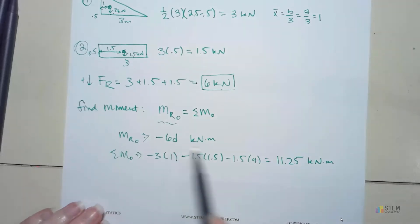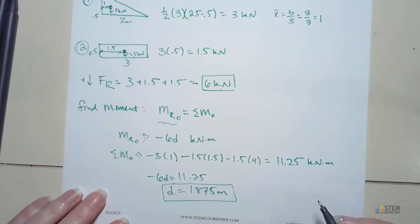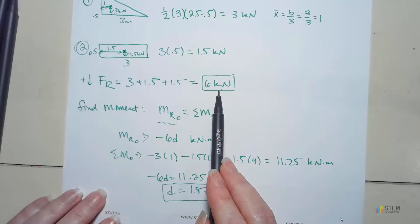Now all we need to do is set this equal to this. Then you can solve for D. What do we get? We end up getting 1.875 meters. So this is our location of the resultant force. 6 kilonewtons is the actual resultant force.